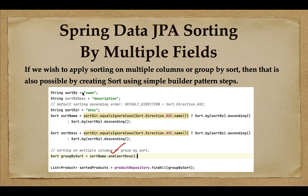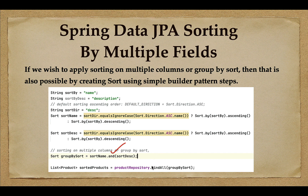Consider this code snippet: we are sorting products by name and description, and the sort direction is descending. If you want to sort by multiple fields, you need to create one Sort object for name and another Sort object for description, and then group them using `.and()`. Then you pass this grouped Sort to the `findAll` method. It's pretty simple.